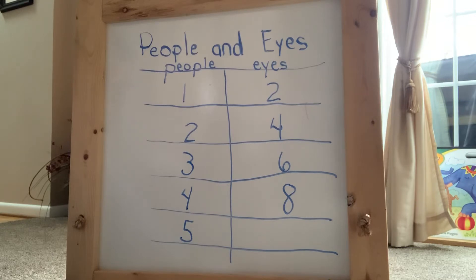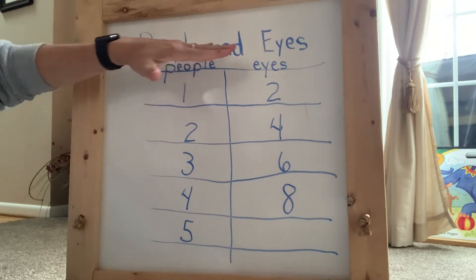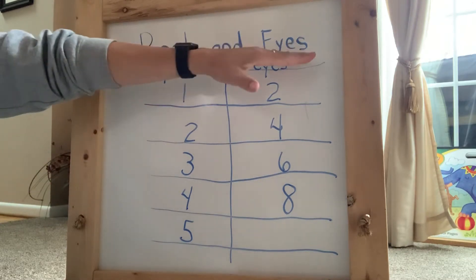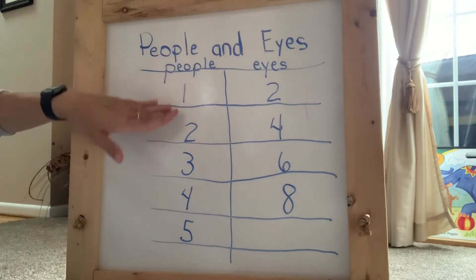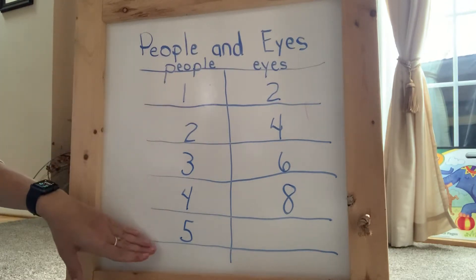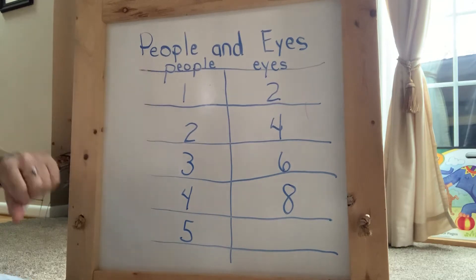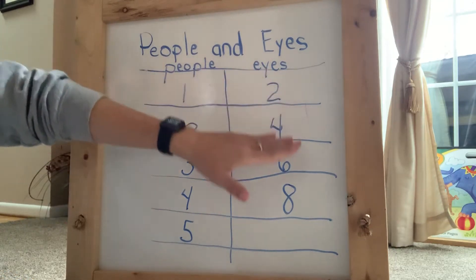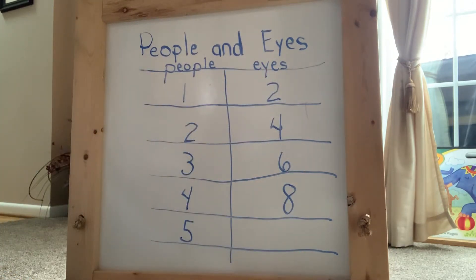Today I want you to take a look at my chart up here. It says people and eyes. This side of my chart has to do with people, and this side of my chart has to do with eyes.